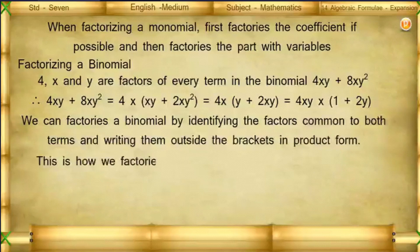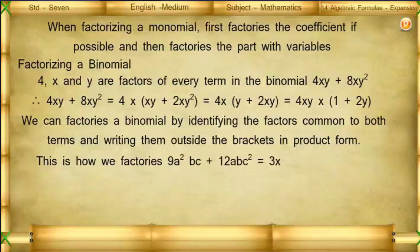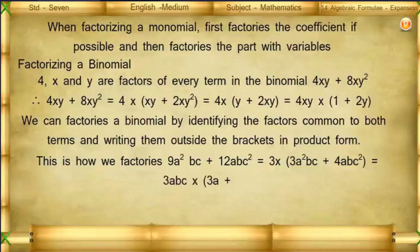Example: 9a²bc + 12abc² = 3(3a²bc + 4abc²) = 3abc(3a + 4c).